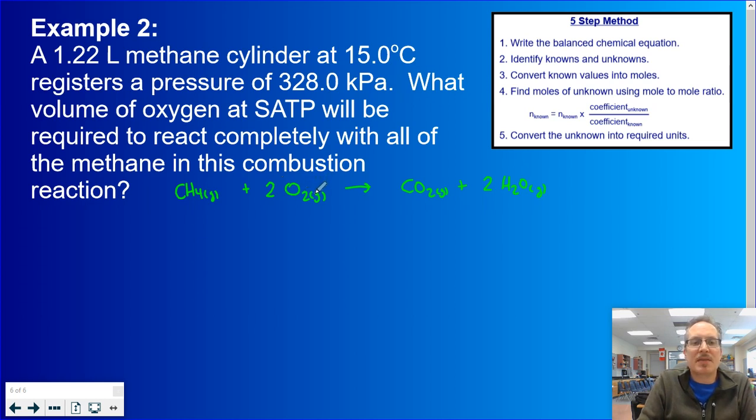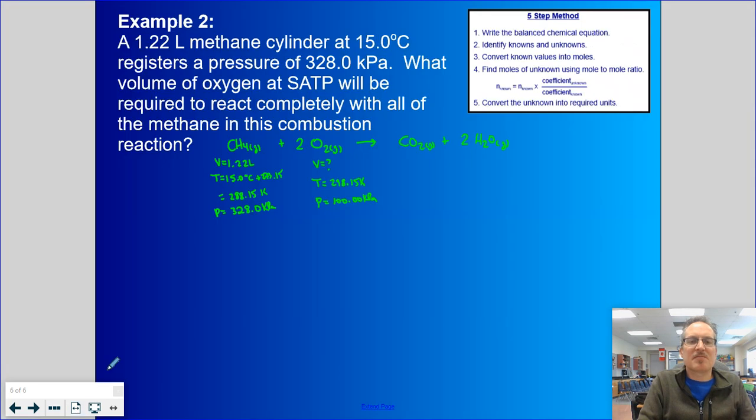A 1.22 liter methane cylinder, so that is my volume at 15 degrees Celsius. So my temperature is 15, so I have to add 273.15. That's going to take me to 288.15. And my pressure is 328.0 kilopascals. What volume of oxygen at SATP? So I know the temperature at SATP. It is 298.15 kelvins. And I know the pressure at SATP because it's 100 kilopascals.